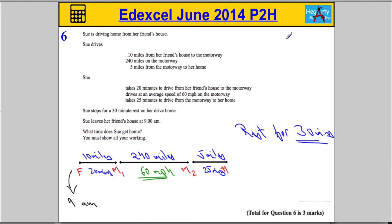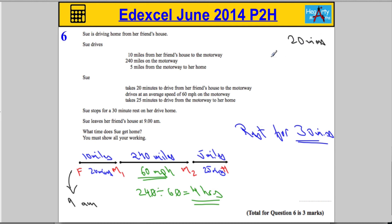We're satisfied that the first leg takes 20 minutes — we don't need to work that out. For the motorway leg, she drives 240 miles at 60 miles per hour. 60 miles per hour means if she drove 60 miles it would take one hour. So I'm going to divide 240 by 60 — the two zeros cancel out, and 6 divides into 24 four times. So that's going to take 4 hours for that leg of the journey.